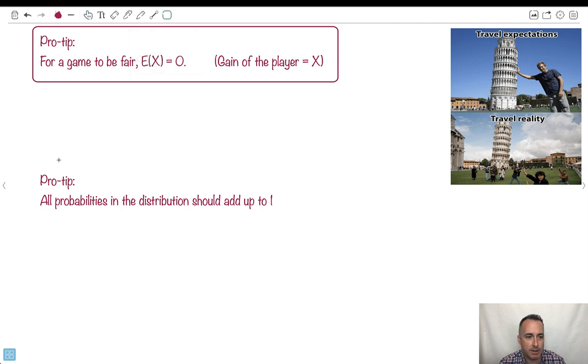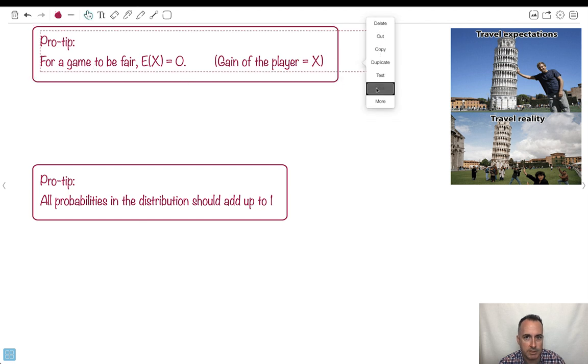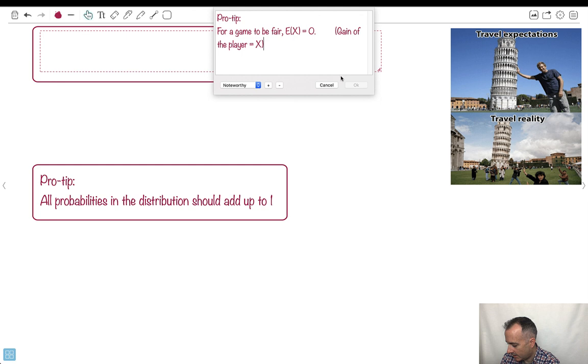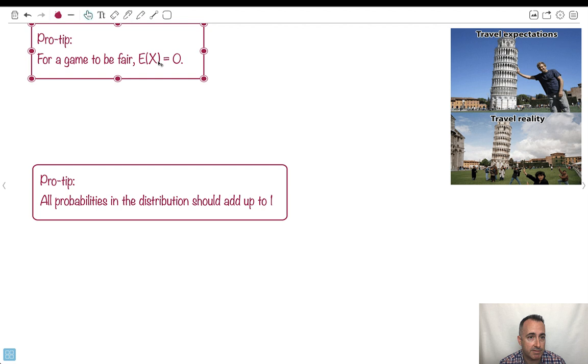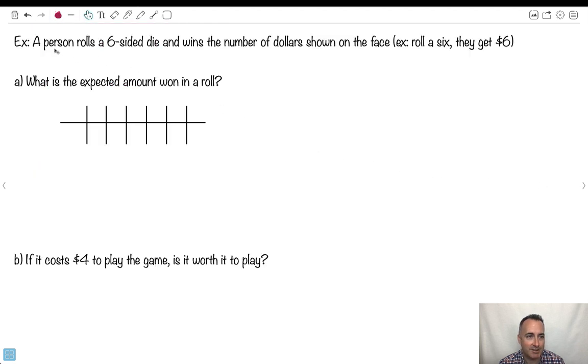Also, we know that all the probabilities right here. Let me just change the text here. For a game to be fair, expected value is zero. In other words, the player shouldn't gain anything, or at least the expected value should be zero. Probabilities should all add up to one, as usual for probabilities. And let's go ahead and do an example.